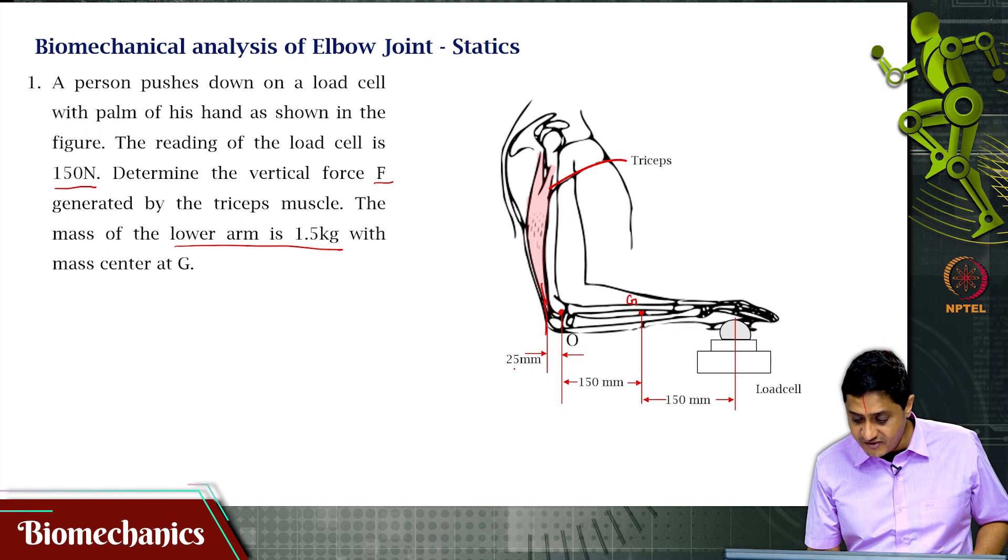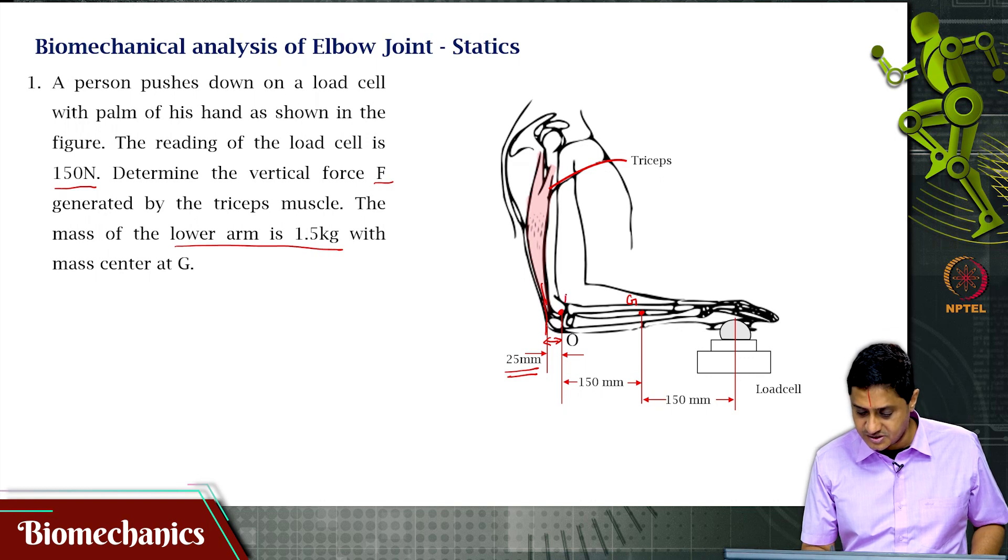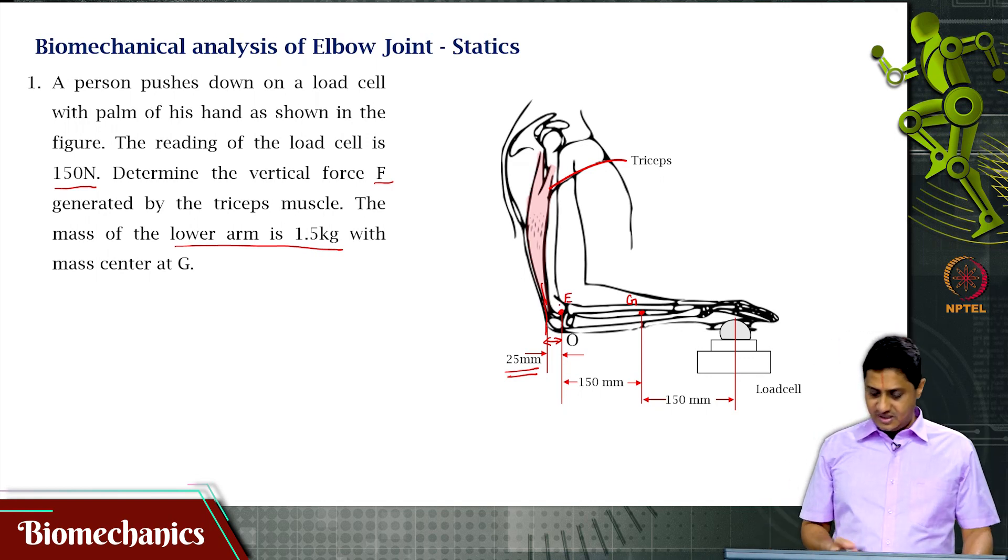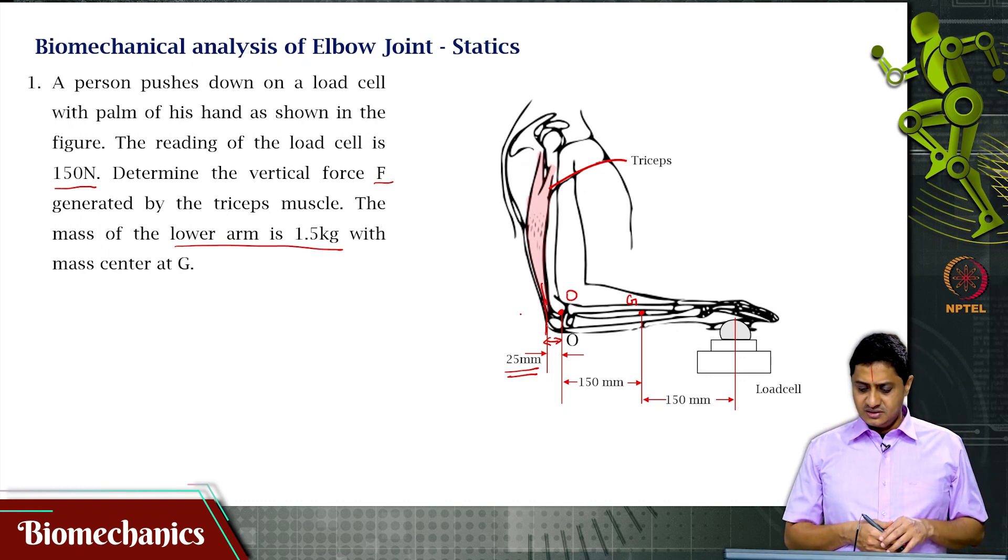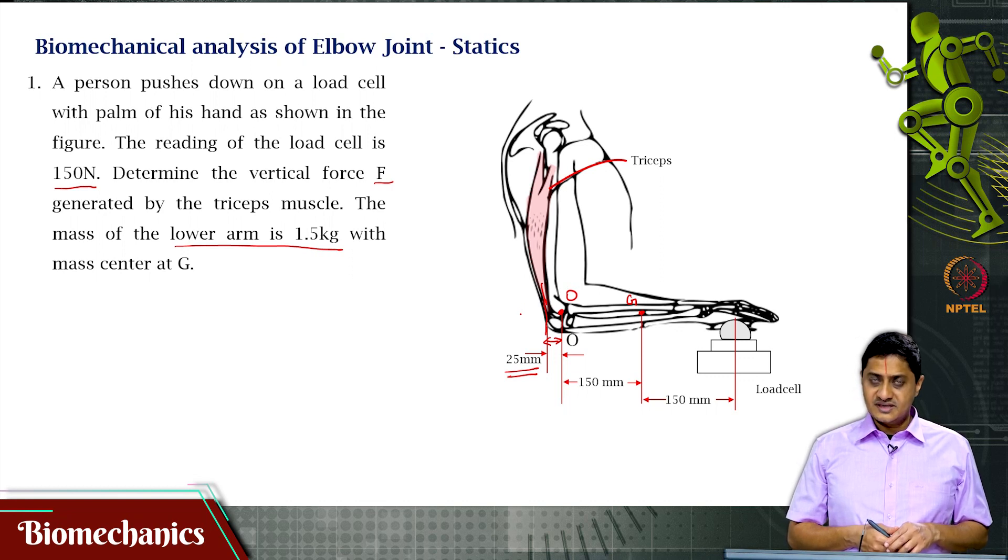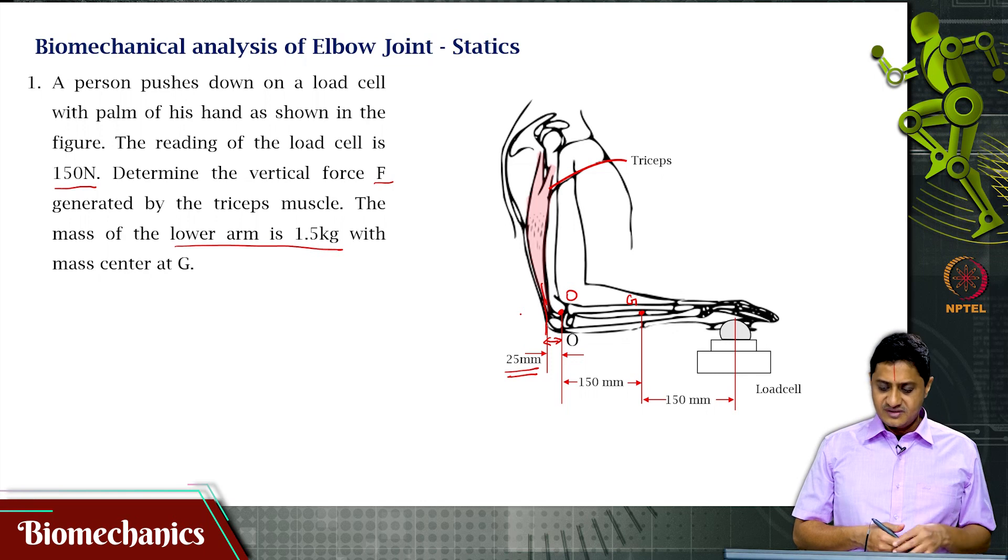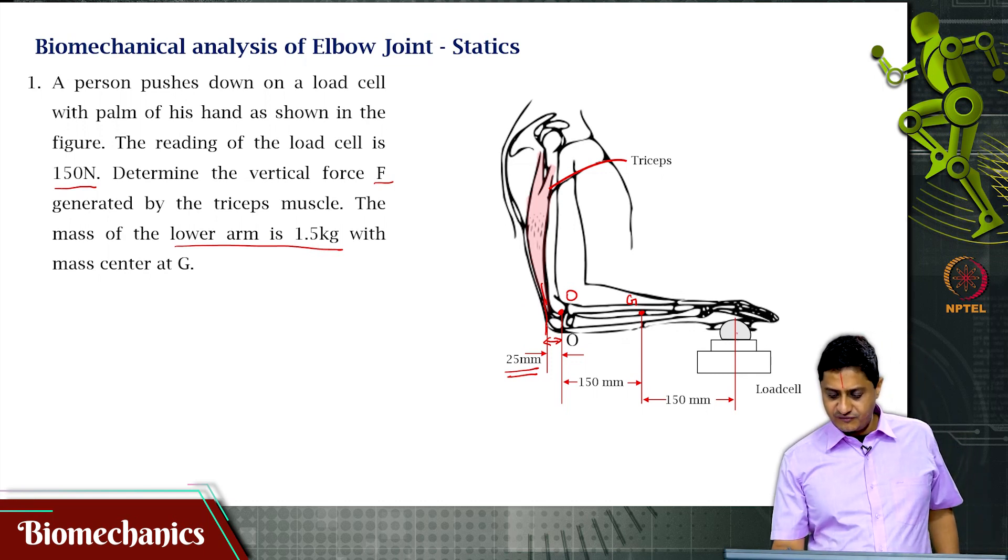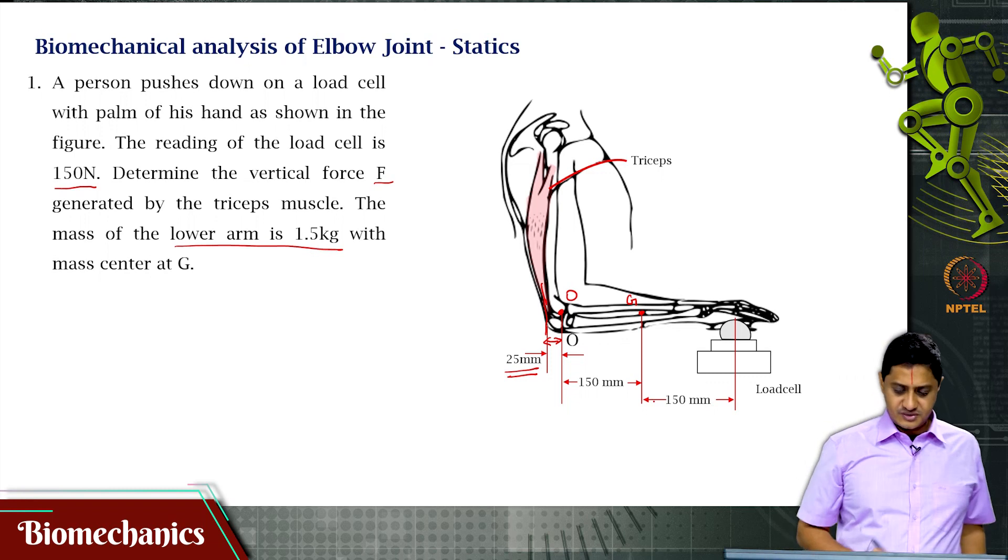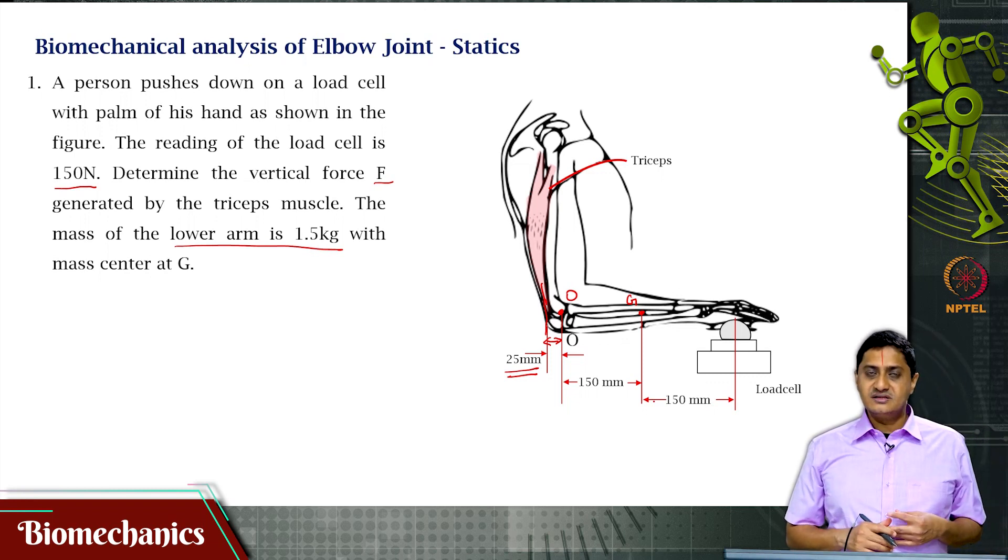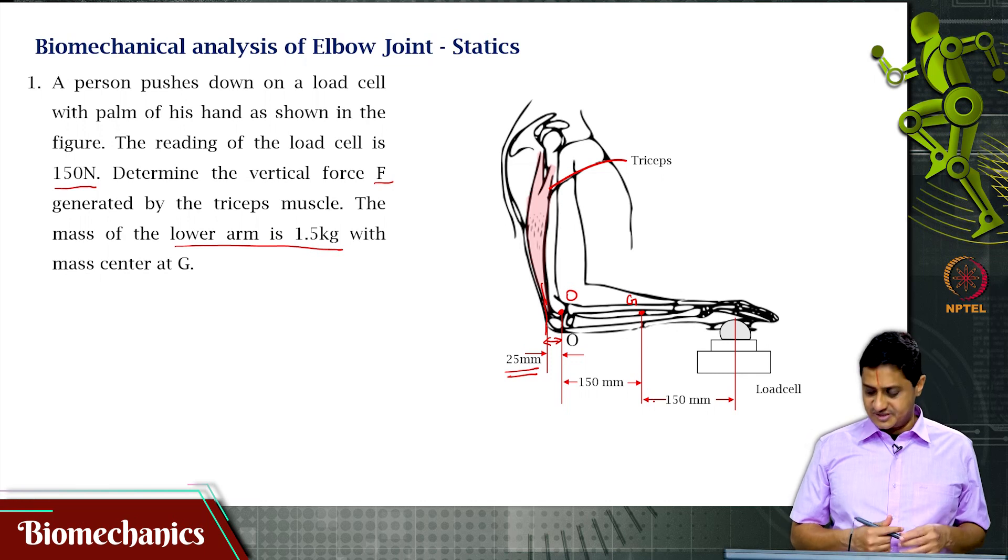The triceps is attaching at a distance of 25 mm perpendicular distance from the elbow joint. The center of mass of the forearm itself is at a distance of 150 mm from the elbow joint. The measurement of force found on the load cell is 150 newtons. The question is find the force produced by the triceps muscle.